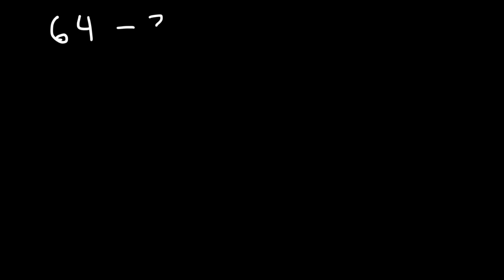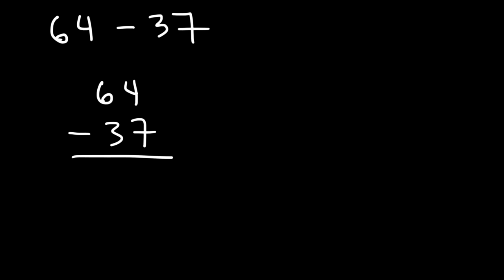What about 64 minus 37? Go ahead and try that example. This example is a little bit different than the other ones. What is 4 minus 7? 4 minus 7 is negative 3, and so we don't want to do that. When you get into a situation like that — if you subtract two numbers in a column and get a negative result — you need to borrow.